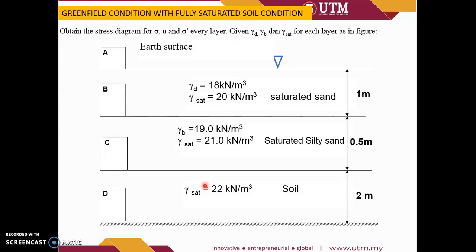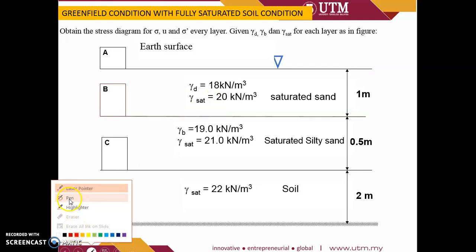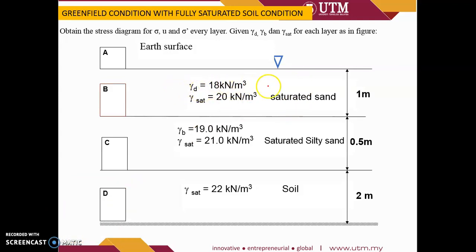Next is another condition — a fully saturated soil condition with the groundwater table at the surface. Here we have two different values, gamma dry and gamma saturated. Similarly for the saturated silty clay you are given gamma buoyant and also gamma saturated. For layer 3 you will have only the unit weight of saturated — so which one to be used in this condition?